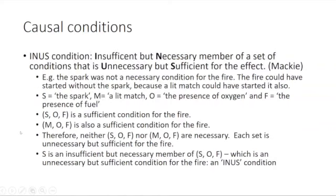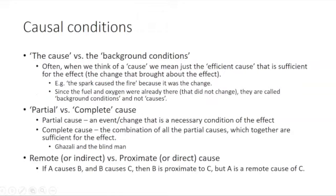We also have remote or indirect versus proximate or direct causes. This is simple: if A causes B and B causes C, then B is proximate to C, but A is a remote cause of C because A causes C only through causing B. With more intermediaries — A causes B, B causes C, C causes D — A is the remote cause of D. Usually the more remote a cause is, the more partial it will be as well.